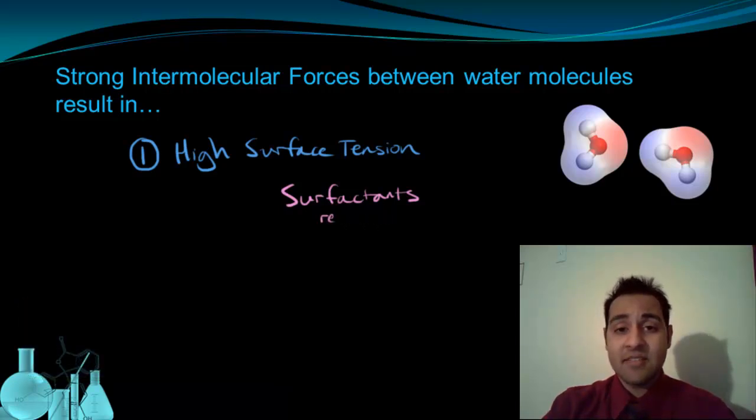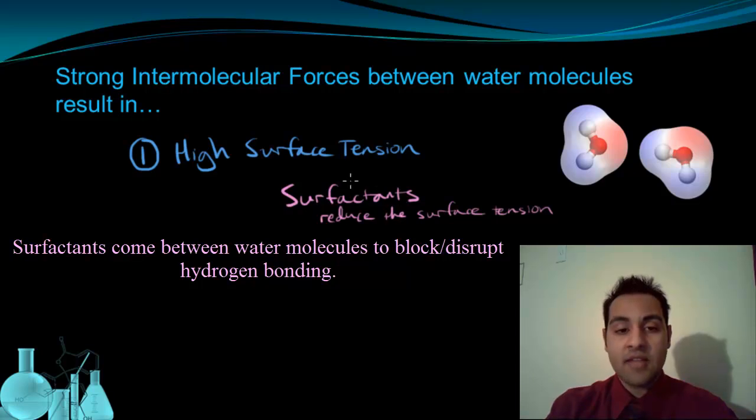And the surfactants in these products work by reducing the surface tension of water. These molecules of surfactants physically interfere with the intermolecular forces between water molecules. They block the hydrogen bonding that occurs between water molecules, and that allows them to reduce the surface tension.